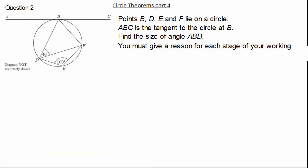Moving on to our next question. This question states B, D, E and F lie on a circle. ABC is the tangent of the circle at point B. We are asked to find angle ABD. It is important to give a reason for each stage of our working. Why not give it a go and press pause if you need.